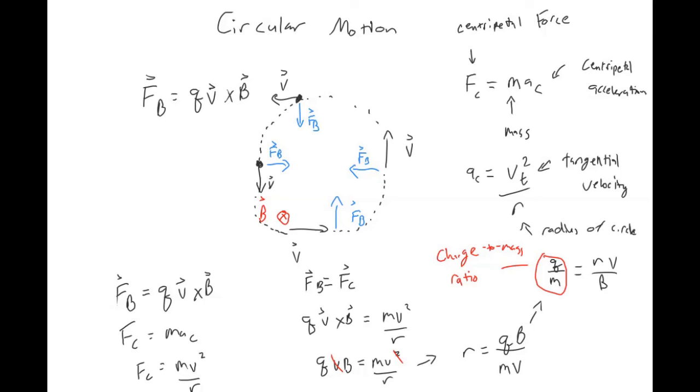So far we've just considered the force on a single particle moving at some velocity in a magnetic field. But in most situations we don't have a single particle — we have lots of particles moving, like a current in a wire. So we'll look at the force on a current-carrying wire.